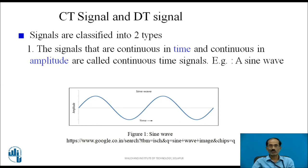Moving on to Continuous Time Signal and Discrete Time Signals. There are two types of signals: Continuous Time and Discrete Time. Signals that are continuous in time and continuous in amplitude are called continuous time signals. An example is a sine wave. Along the x-axis is time, and along the y-axis is amplitude. Time is an independent variable and is continuous in nature, and at every instant of time there is an amplitude — it is continuous in nature.